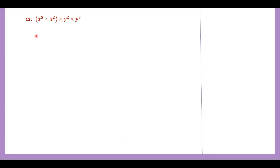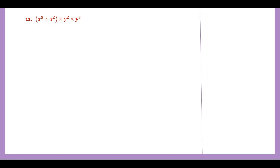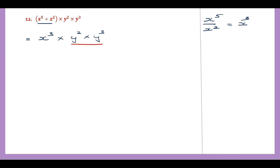Question 12. Here the operations are brackets and multiplication. So first we have to remove the brackets by working out what is inside: x to the power of 5 divided by x to the power of 2, which is x to the power of 5 minus 2, giving x to the power of 3. Then we continue with into y square into y cubed. Now all are multiplication, so working out the like terms: x cubed into y to the power of 2 into y to the power of 3 — in multiplication we add the powers — so y squared times y cubed is y to the power of 5. The answer is x to the power of 3 y to the power of 5. This is our final answer.